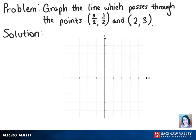To graph the line which passes through the points 3 halves, 1 half, and 2 comma 3, the first thing we need to do is plot those points.